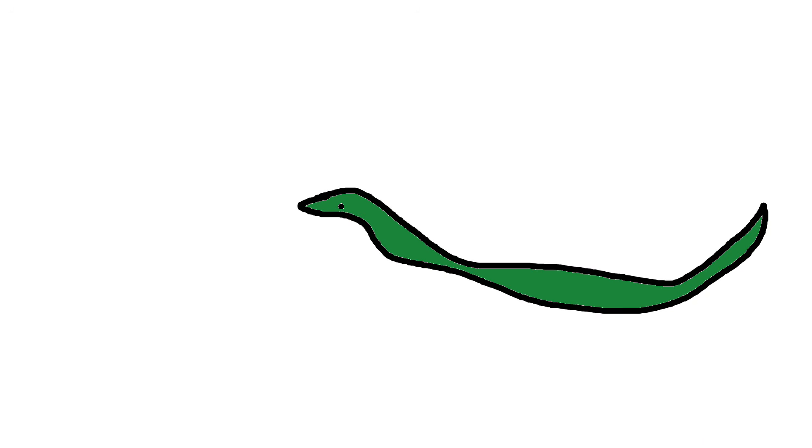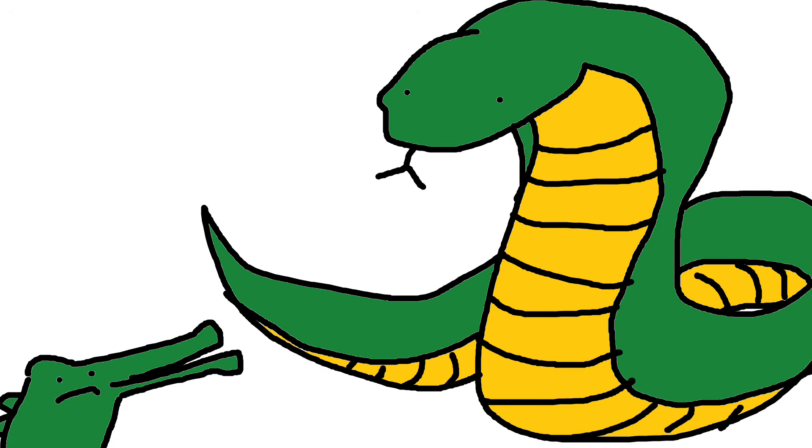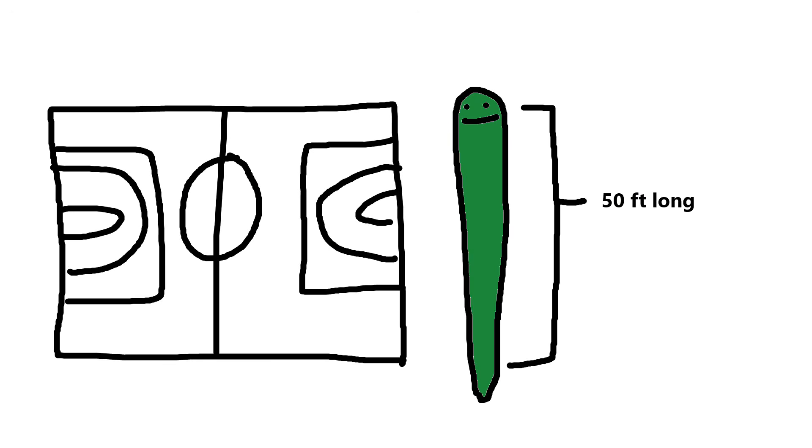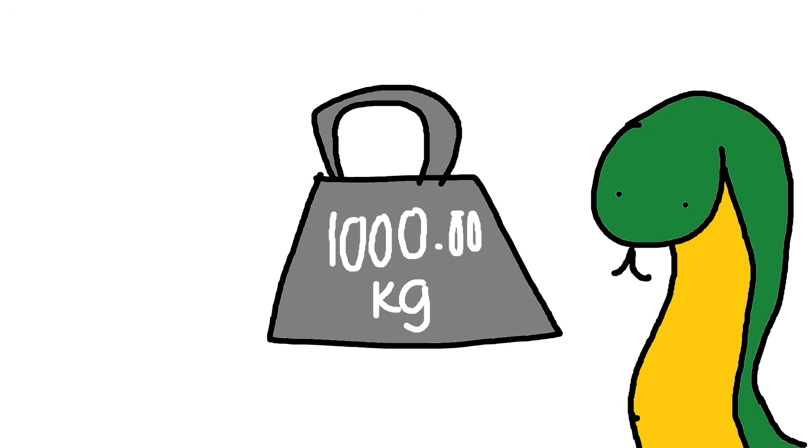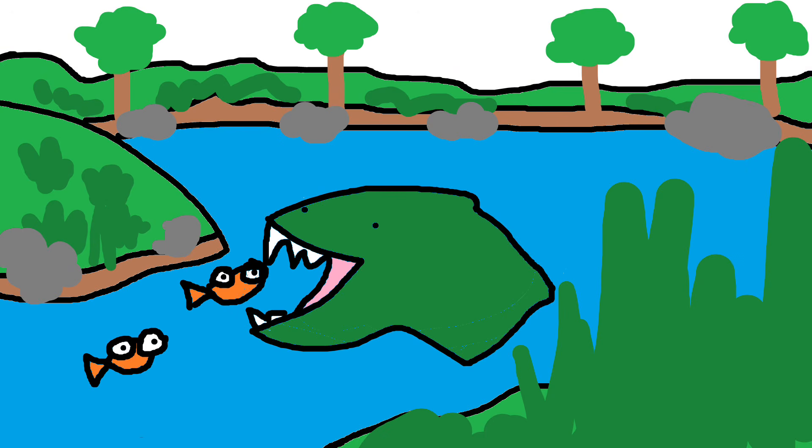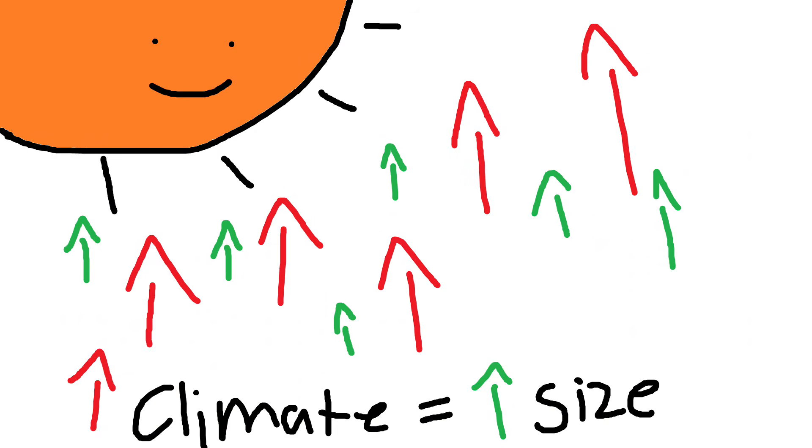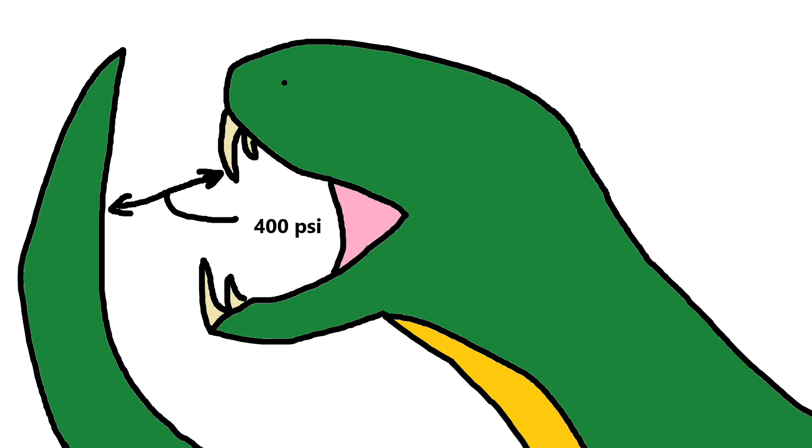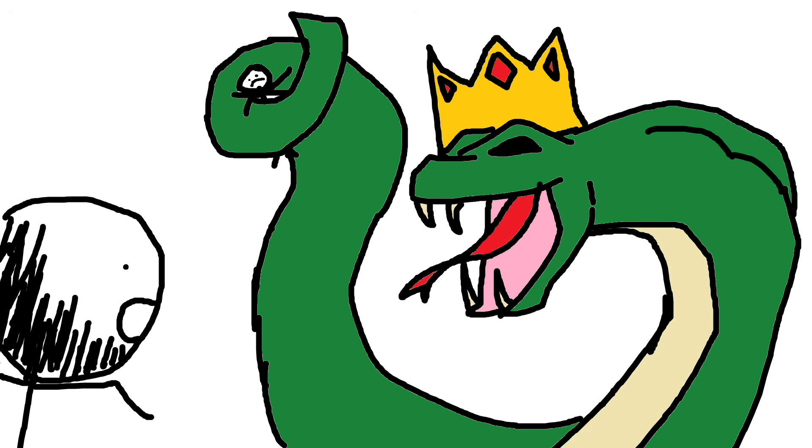Titanoboa cerrejonensis, a snake so large, could swallow a crocodile whole. This prehistoric predator lived 60 million years ago during the Paleocene epoch in what's now Colombia. At 50 feet long and weighing over a ton, this monster dominated its tropical environment. Scientists believed that it hunted in murky waters, ambushing unsuspecting prey with incredible speed and strength. Its size was made possible by the warm climate of its time, which allowed cold-blooded reptiles to grow to such extremes. Fossil evidence shows that Titanoboa's immense power and serpentine agility made it virtually unstoppable, rooting the rivers of its prehistoric habitat as an apex predator of its time.